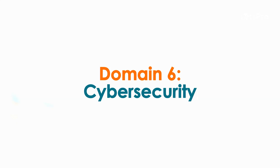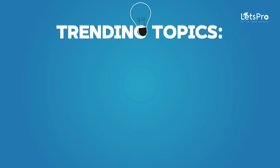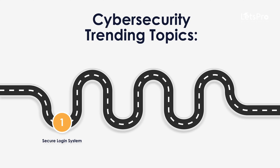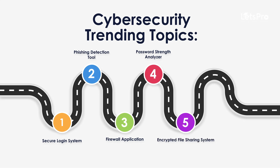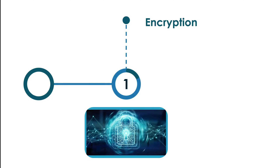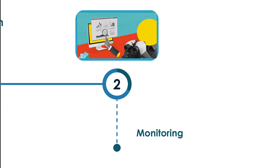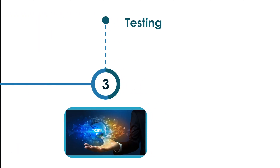Domain 6: Cybersecurity. Cybersecurity involves protecting digital systems from unauthorized access and threats. Trending topics include: a Secure Login System with multi-factor authentication; a Phishing Detection Tool using AI to identify phishing emails; a Firewall Application to block malicious IPs; a Password Strength Analyzer; and an Encrypted File Sharing System. For development, use encryption algorithms like AES or RSA, develop a dashboard to display detected threats, and simulate attacks to evaluate the system's resilience.